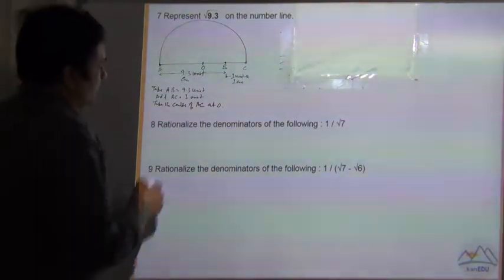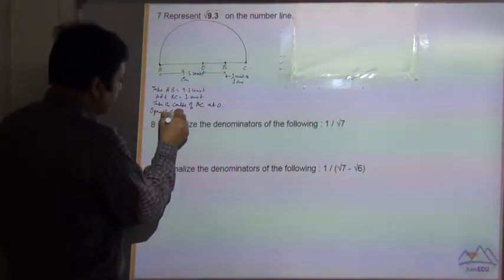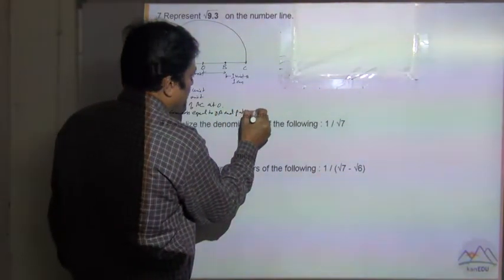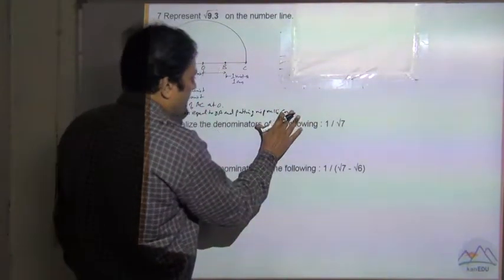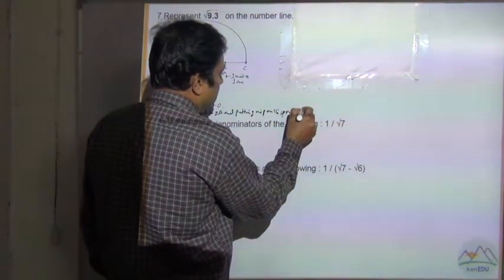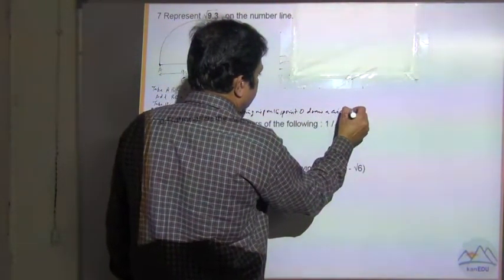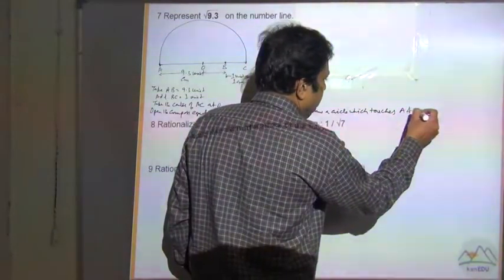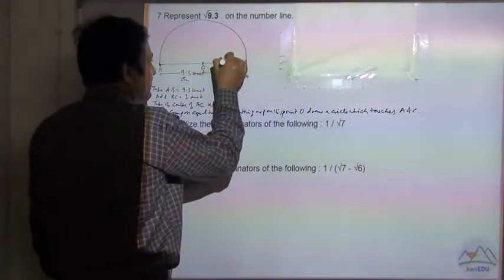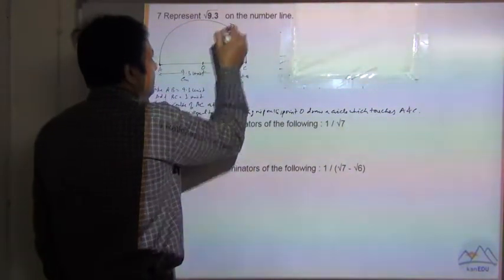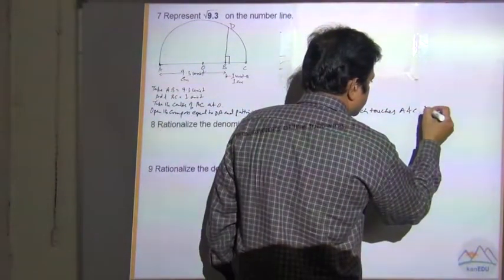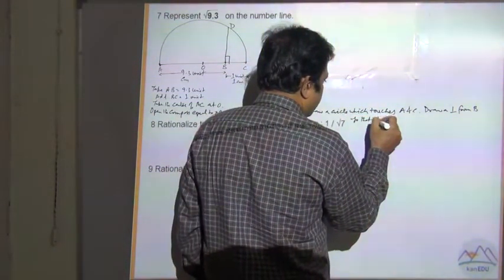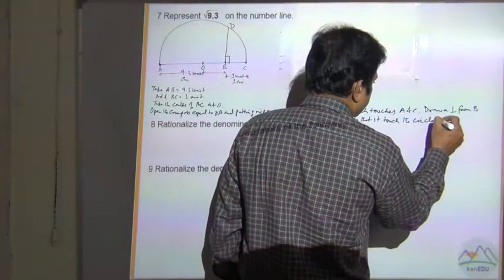Open the compass equal to OA, put the nip on point O, and draw a circle which touches A and C. Now draw a perpendicular from B so that it touches the circle at point D.